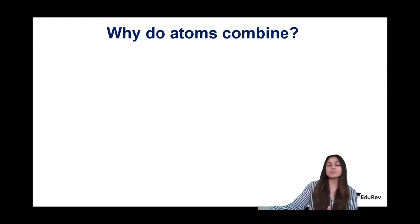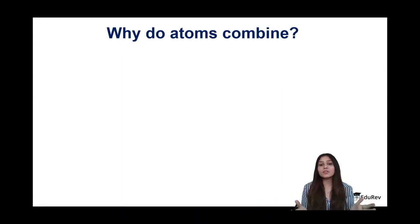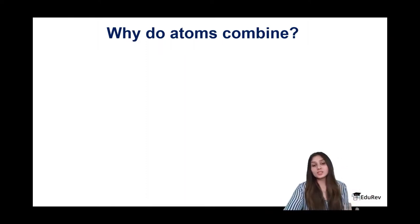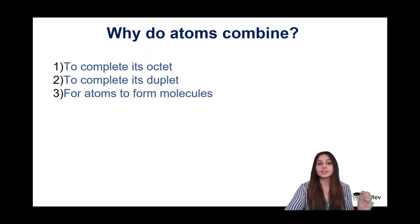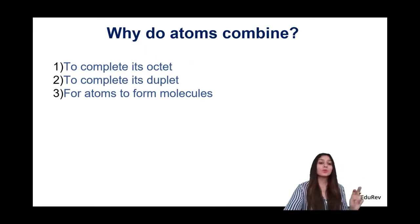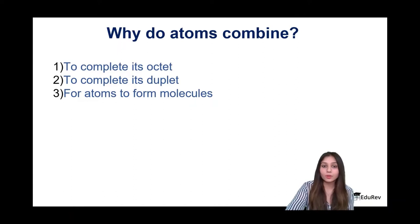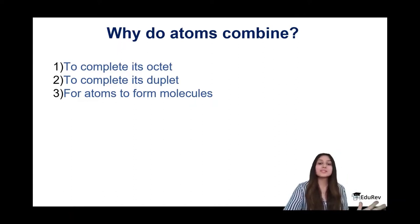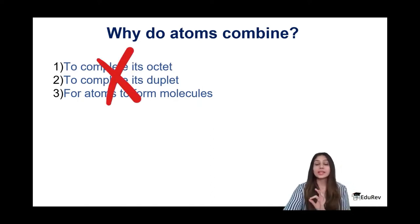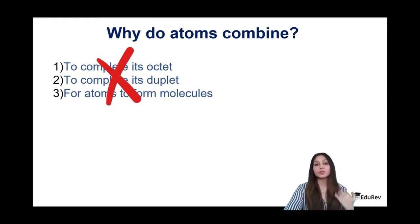The second most inevitable question is: why do atoms even combine? If you ask this question to a pool of people, you'll get answers like: to complete its octet (eight electrons in the outermost shell), to complete its duplet (two electrons in outermost shell), or for atoms to become molecules. All this is true but these are not the actual reasons. The real reason why atoms combine to form molecules is energy — energy is what controls everything.